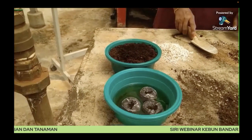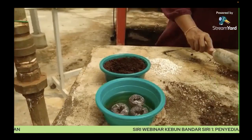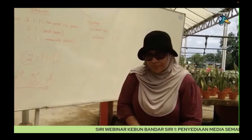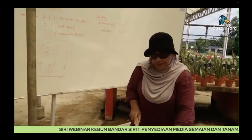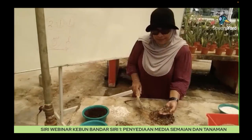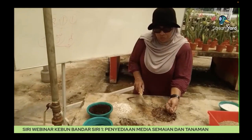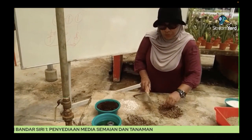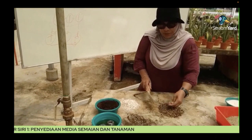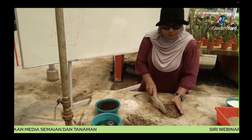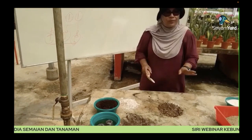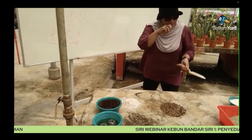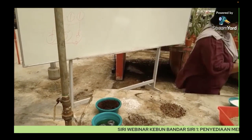So yang sebaiknya adalah kita buat mixture so that dia punya keadaan jadi sesuai untuk pertumbuhan ataupun tumbesaran akar pokok. So dekat sini kita settle tentang semayan ni. Now we go to media tanaman.